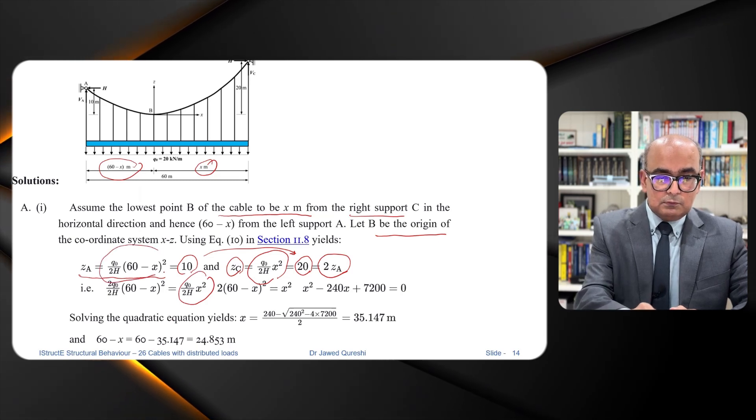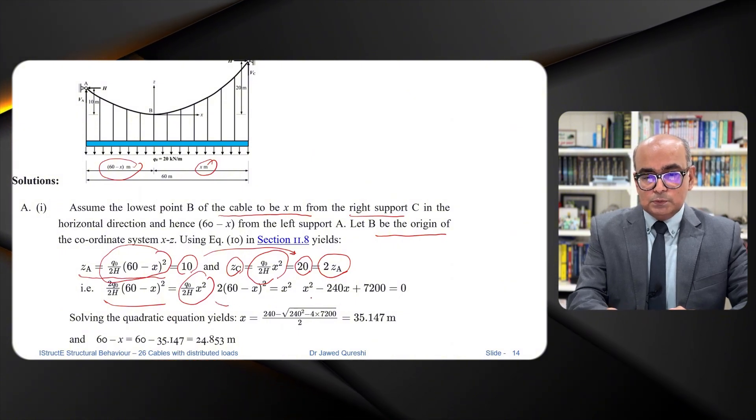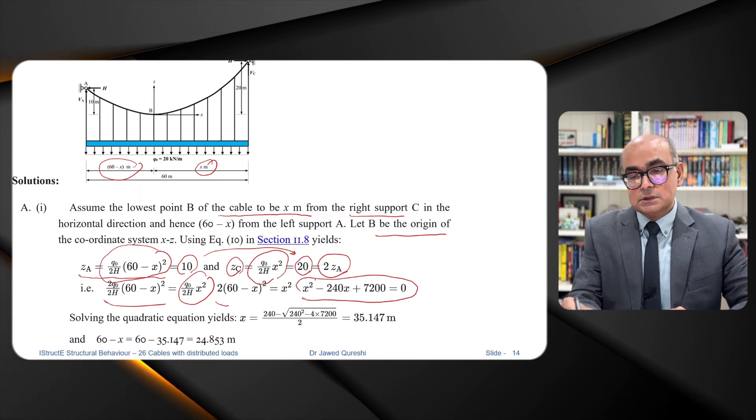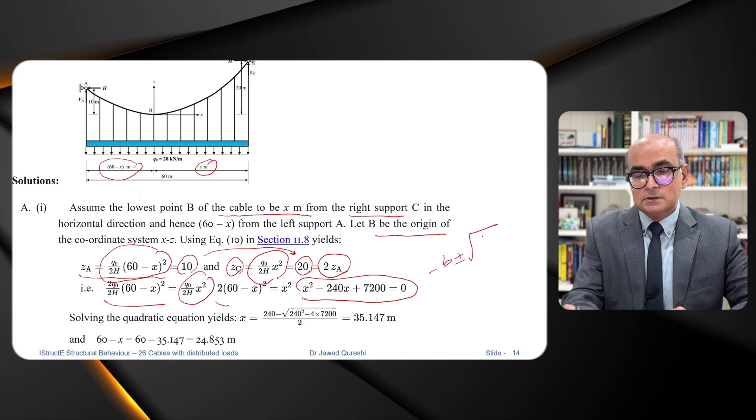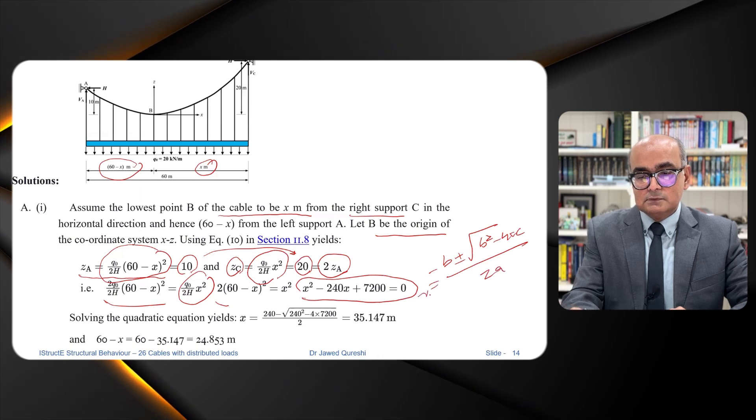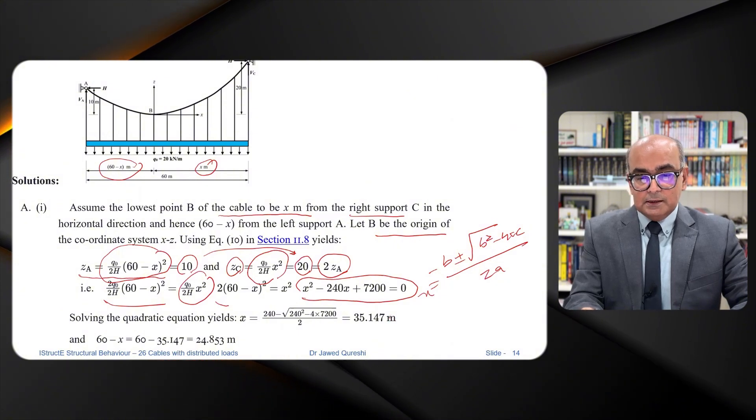If we simplify it, you will get one quadratic equation and if you use this formula minus B plus minus under root B square minus 4AC divided by 2A. This is value of X then you will get two values from here. So we are just getting the positive value because negative value is not possible here. This is value of A, this is B and this value is C.